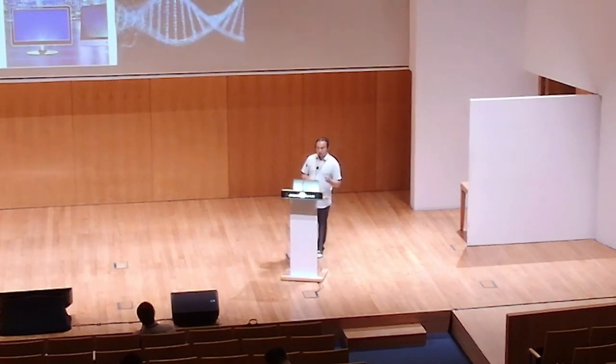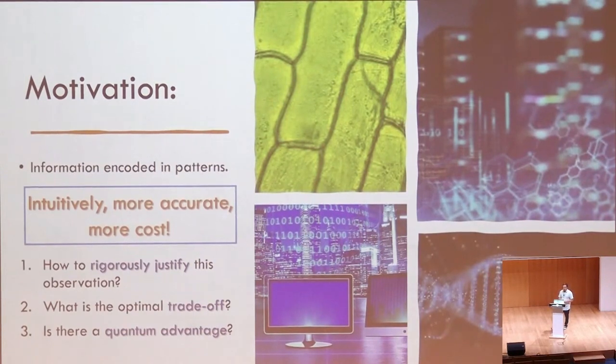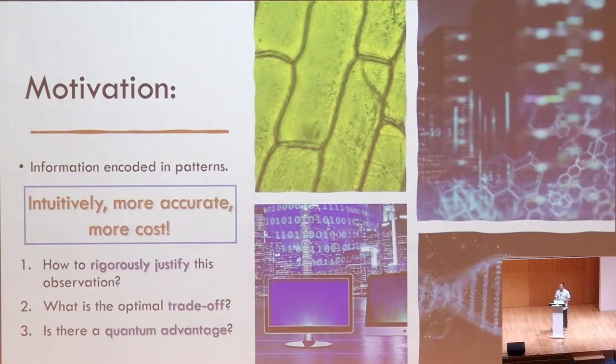Begin with the same motivation. So information is encoded into patterns deviate from thermal fluctuations. So intuitively, the more accurate information process needs, the more non-equilibrium resources it requires. So in this work, we want to rigorously justify this intuition, and we want to explicitly reveal the trade-off between the cost and the accuracy. Our result also reveals the quantum thermodynamic advantage for using quantum devices in certain tasks. Our result based on many great works of the resource theoretic approach to thermodynamics in the past decade, and I'll give you a brief introduction.